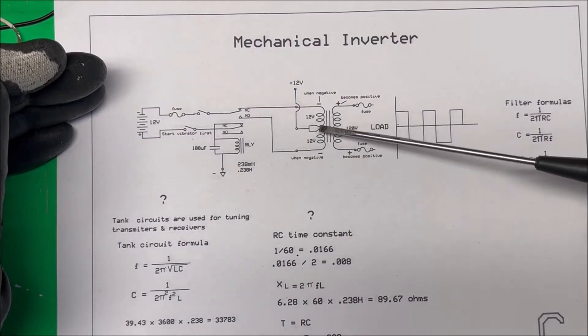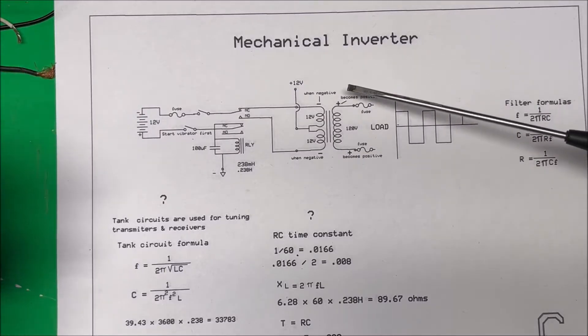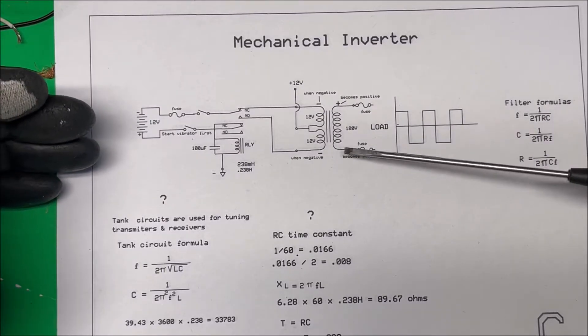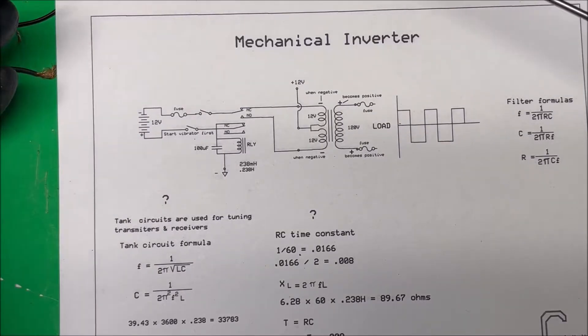What we do is take the positive 12 volts off the power supply and put it right to the center of the two coils here. Then we're switching the negative from here to here - negative here we get positive here, negative here we get positive over here, and they switch back and forth.